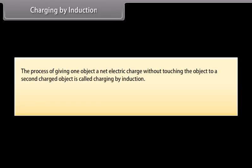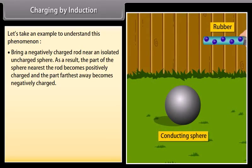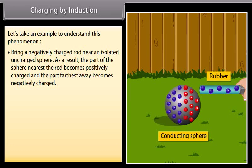Charging by induction: The process of giving one object a net electric charge without touching the object to a second charged object is called charging by induction. When a conductor is connected to the earth by means of a conducting wire, it is said to be grounded or earthed. For example, bring a negatively charged rod near an isolated uncharged sphere; as a result, the part of the sphere nearest the rod becomes positively charged and the part farthest away becomes negatively charged.